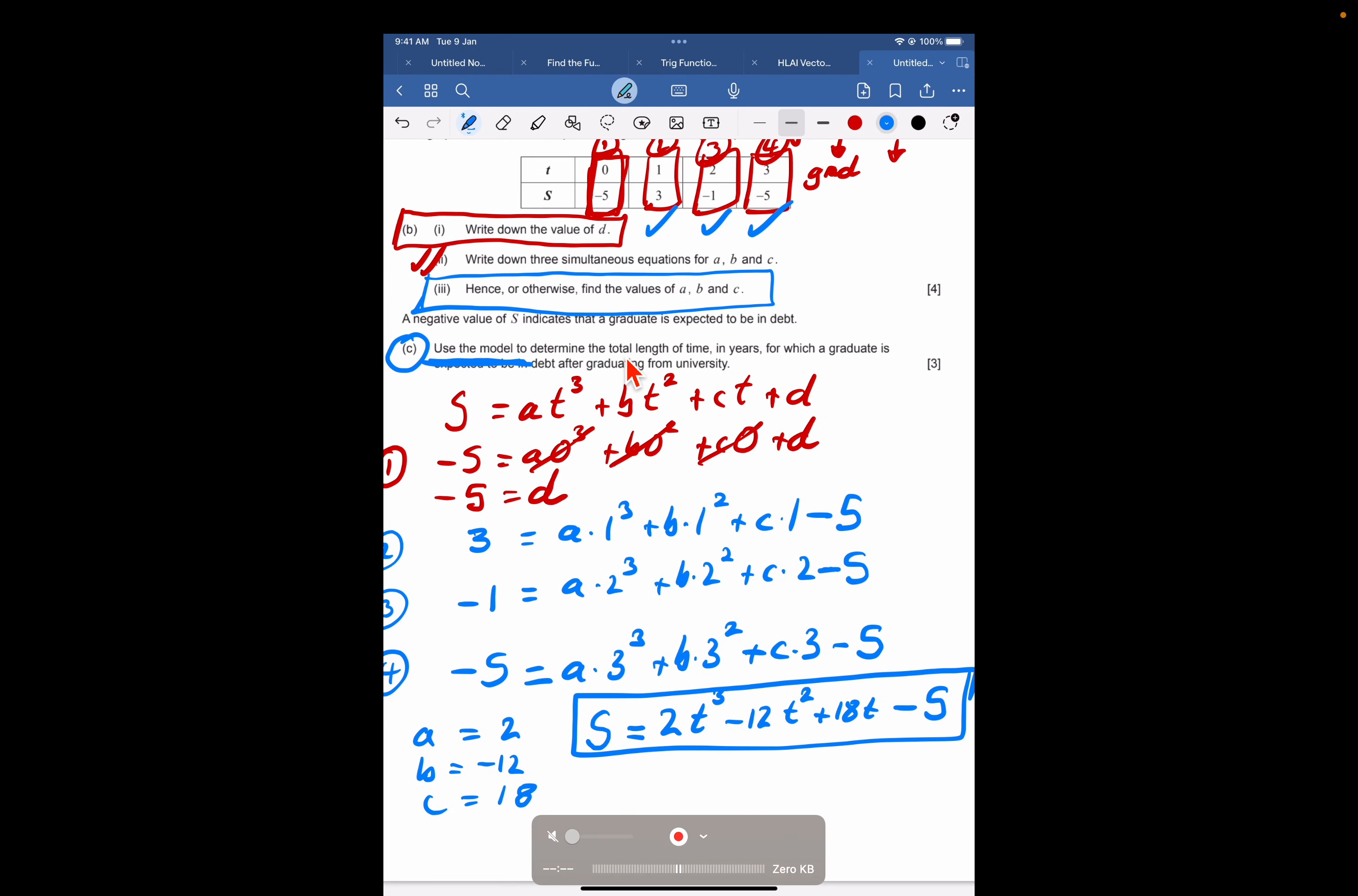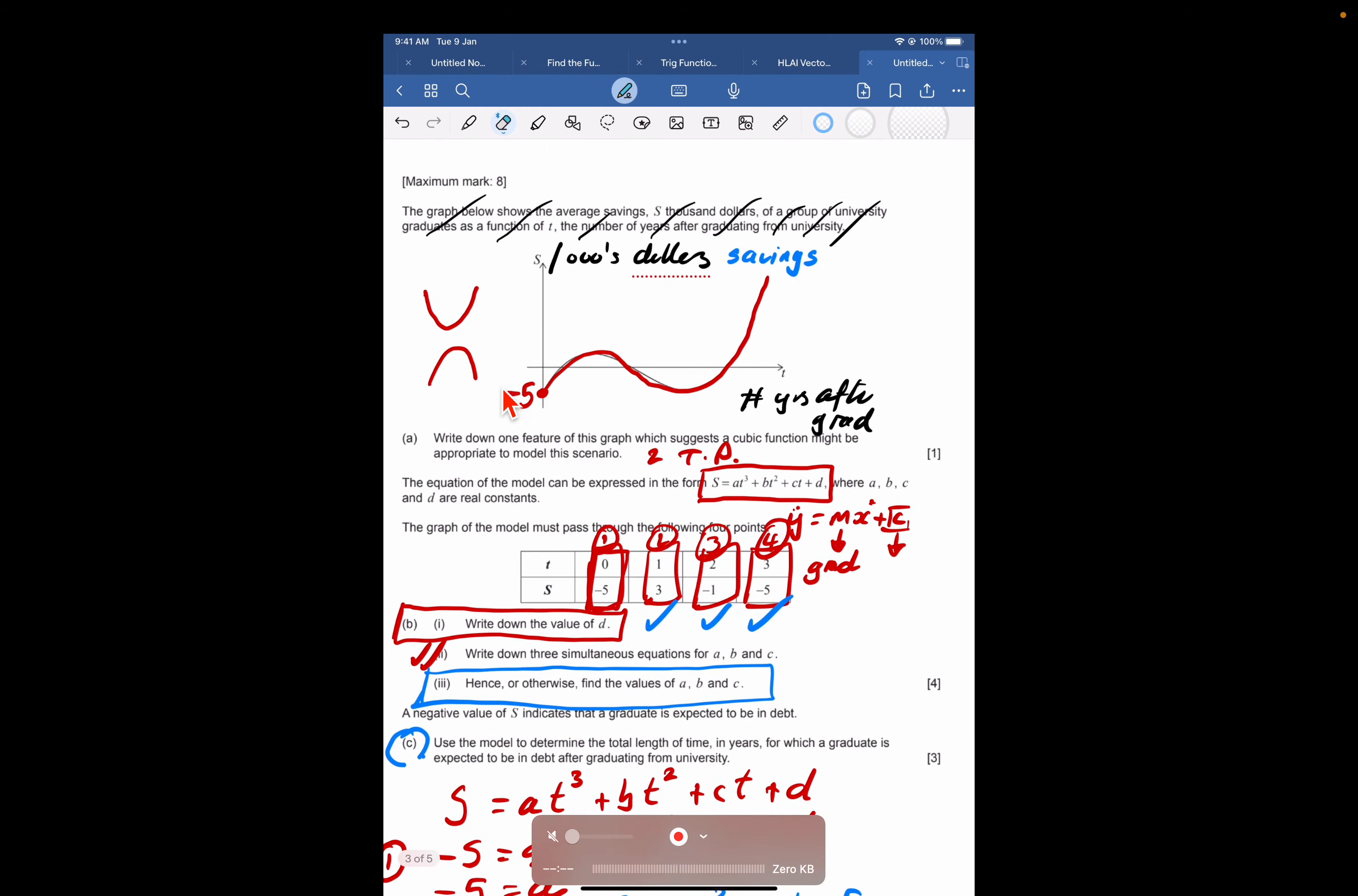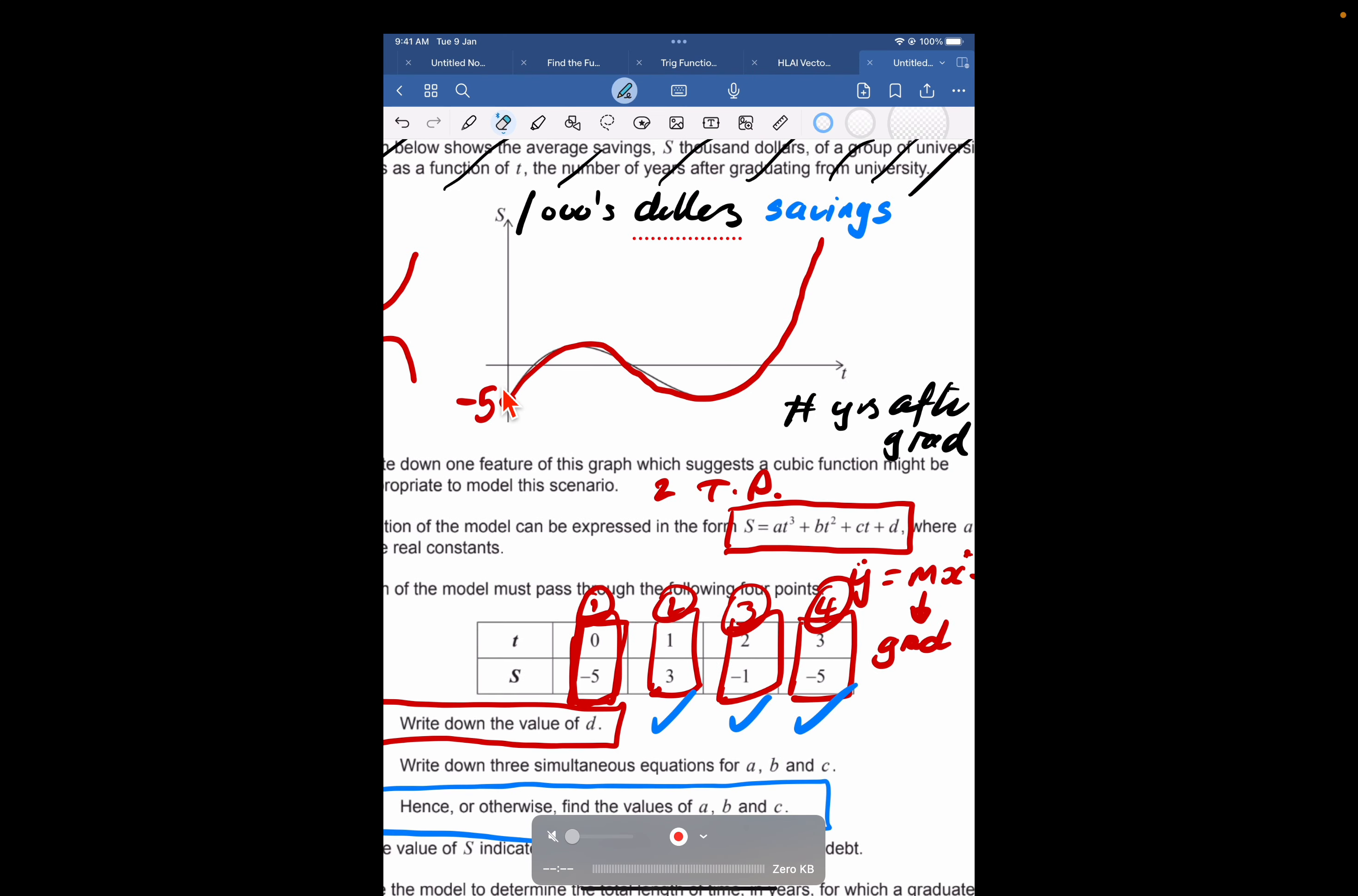So now let's go back to the iPad to find out what the question is asking. Use the model to determine the total length of time in years for which a graduate is expected to be in debt after graduating. In terms of the picture on the question, you can see that there's two sections where we're negative. We've got this section, this amount of time, and we've got this section.